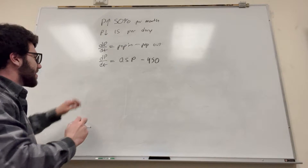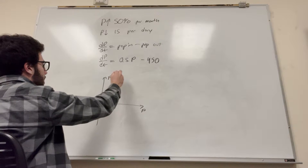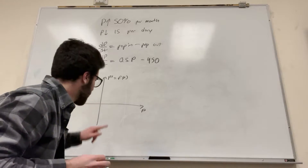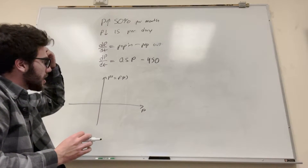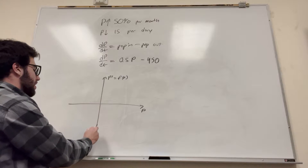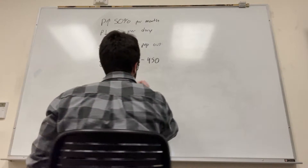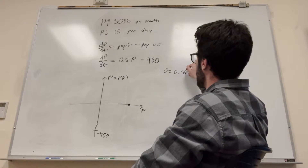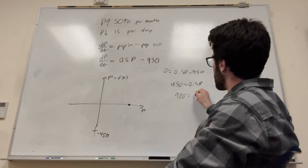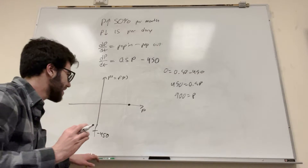Part two: let's draw a phase line. Here's our population, and here's dP/dt as a function of population. When is this equal to zero? That's where our equilibrium point is. Since it's linear, it'll have one equilibrium point. Setting 0 = 0.5P - 450, we get 450 = 0.5P, so P = 900. That's when the rate of change equals zero.